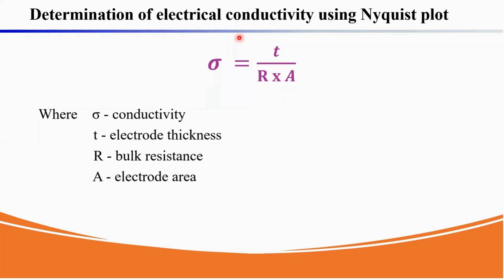This is the formula for electrical conductivity, where sigma represents the electrical conductivity, T is the electrode thickness, R is the bulk resistance, and A is the electrode area.